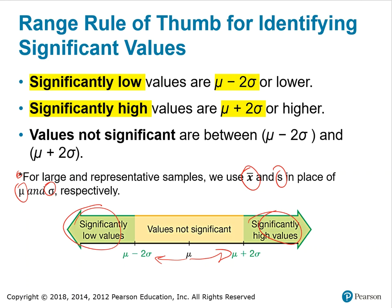For large data and representative samples, we use X-bar and S in place of mu and sigma in the notation above.